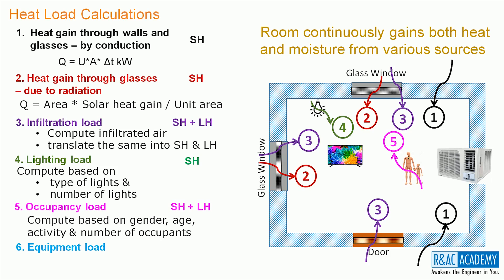And finally, the sixth load is the equipment load. Equipment like TV, computer, printers, etc. will be releasing heat into the room. The room typically gains sensible heat from the equipment. If we are using equipment like coffee maker, etc., then the room gains latent heat also.